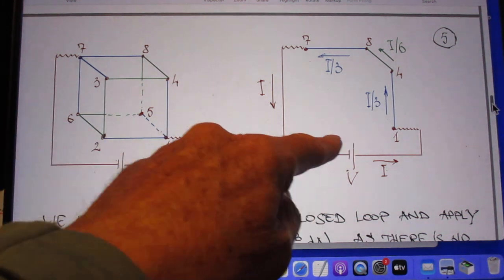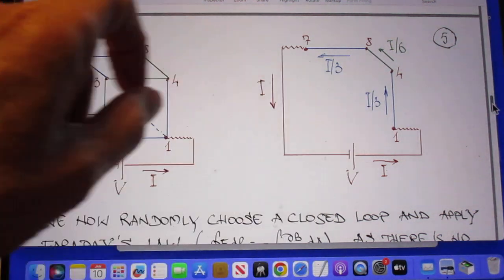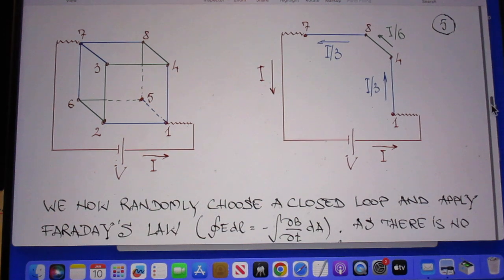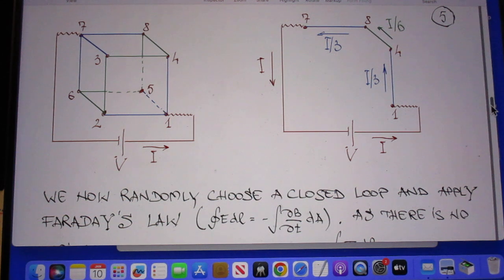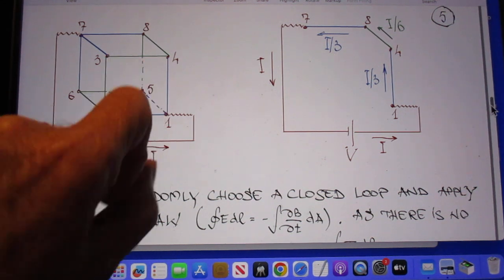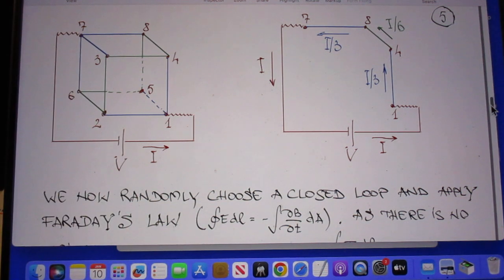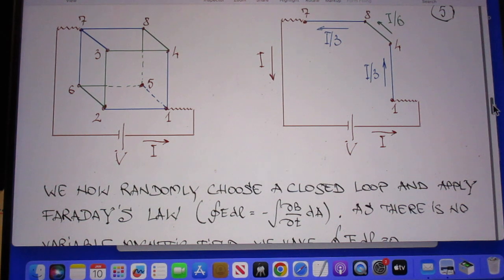He now attaches to the circuit a battery with voltage V. And so current will go in at point one and will come out at point seven. And now he does something that many of you have also done. He applied Faraday's law.